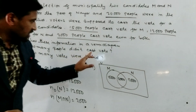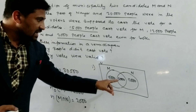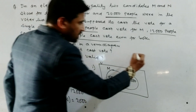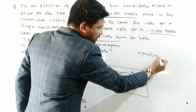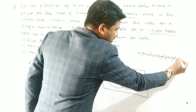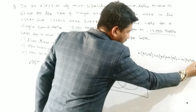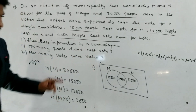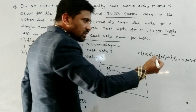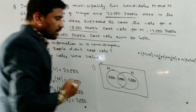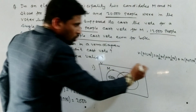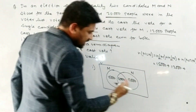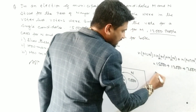Next, how many people did not cast a vote? We need to find n(M ∪ N)' — the complement of the union. First, we find n(M ∪ N). The formula is: n(M ∪ N) = n(only M) + n(only N) + n(M ∩ N). So we write: 15,000 + 12,000 + 2,000.